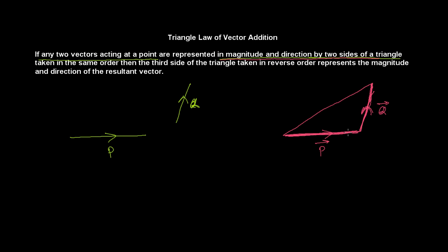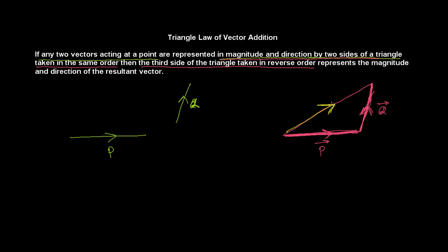Taken in the same order — from tail to head and again from tail to head — so both have the same order, one followed by another. Then the third side of the triangle taken in reverse order: if same order goes this way, reverse order goes the other way. We are going in reverse order.